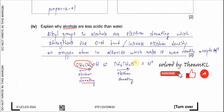Therefore fewer hydrogen ions are formed. You can also explain using the alkoxide ion: when ethanol dissociates it forms ethoxide. The alkyl group pushes electrons onto the oxide ion, increasing its electron density, making it more readily able to regain H⁺. So fewer H⁺ ions remain in solution, meaning the alcohol is less acidic.